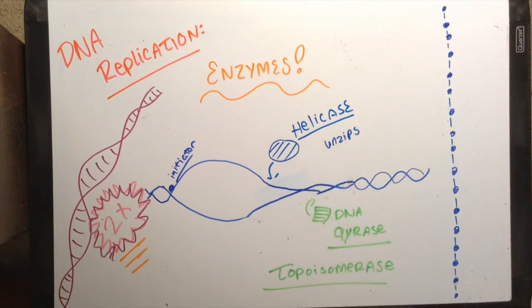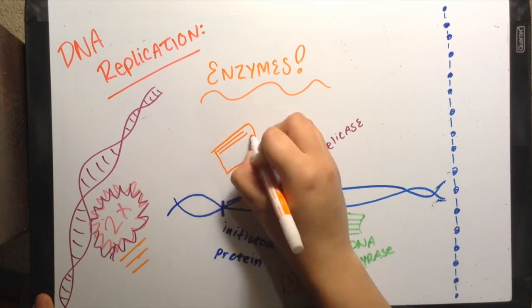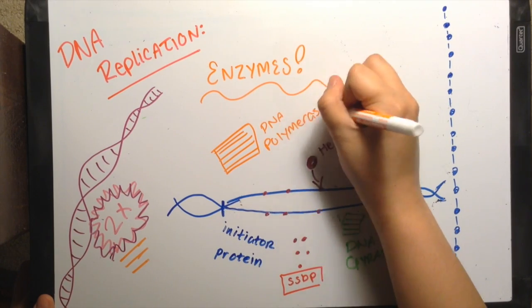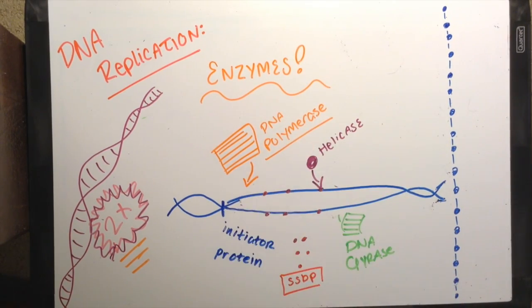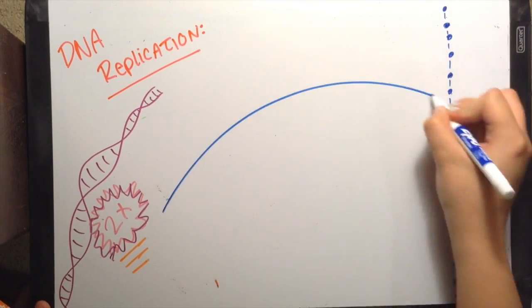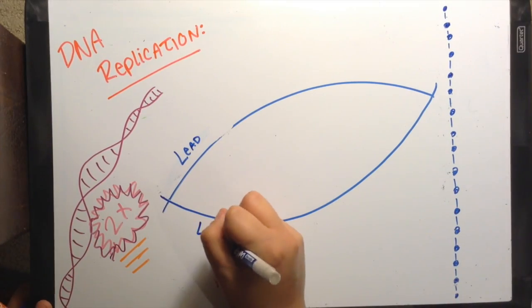Helicase will unzip the strands to make the parent strands. Then single-stranded binding proteins come in to stabilize these parts. DNA polymerase comes in to catalyze the addition of new nucleotides to the 3 prime end for the new strands.